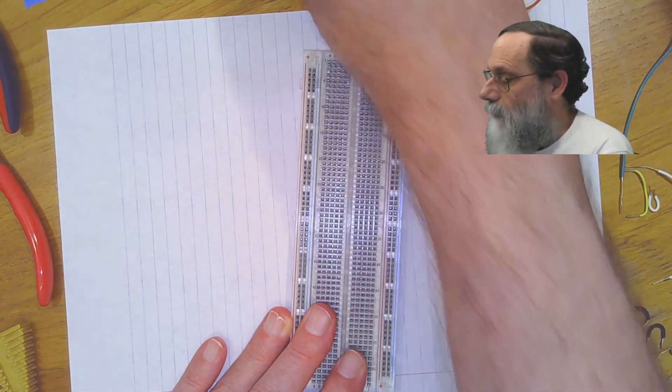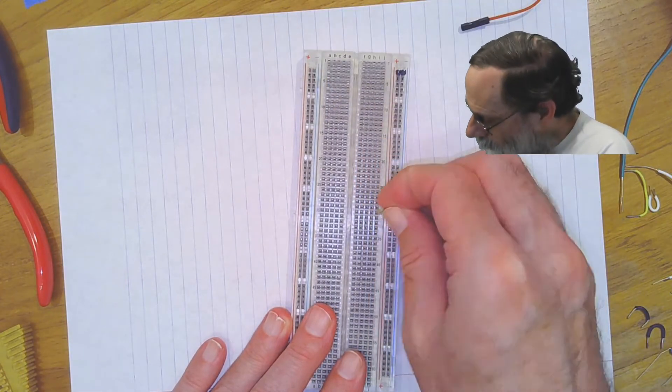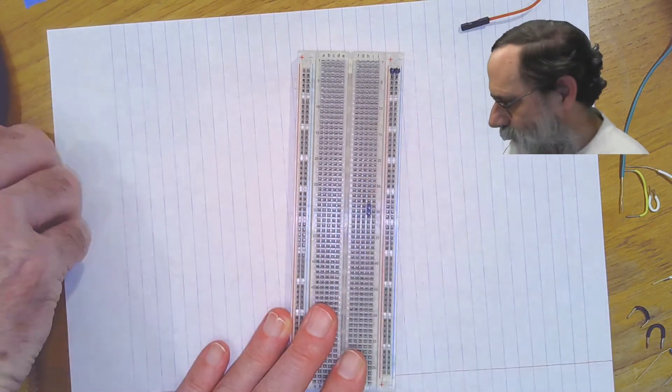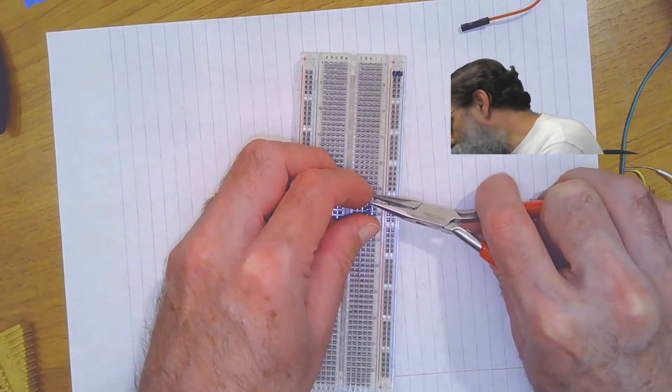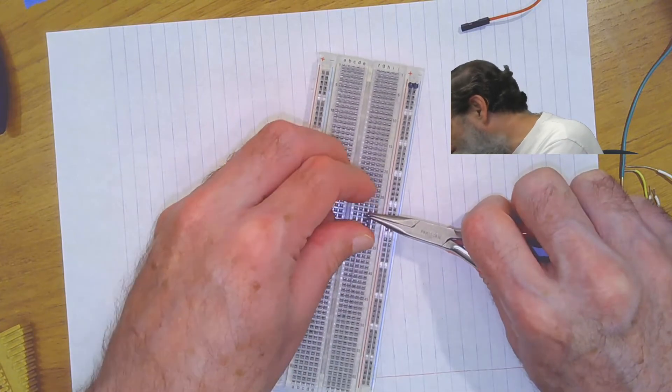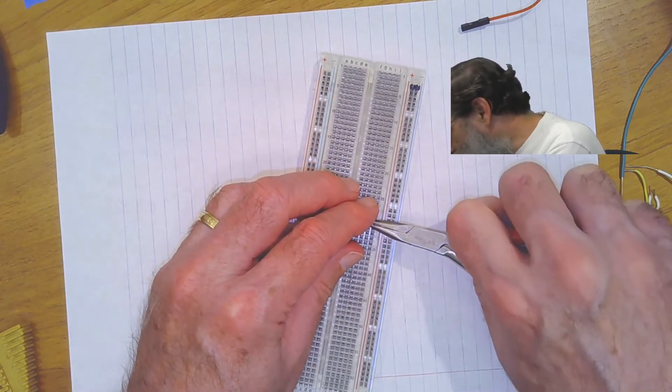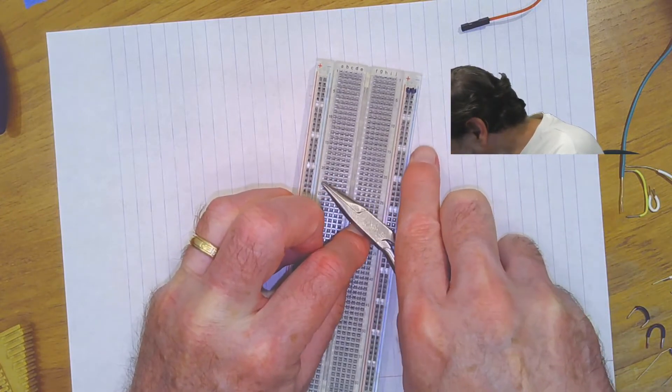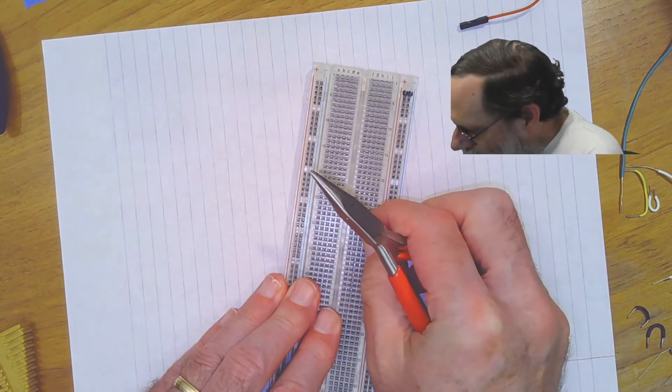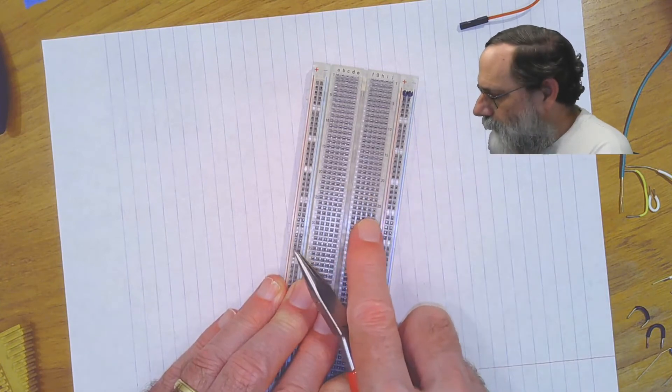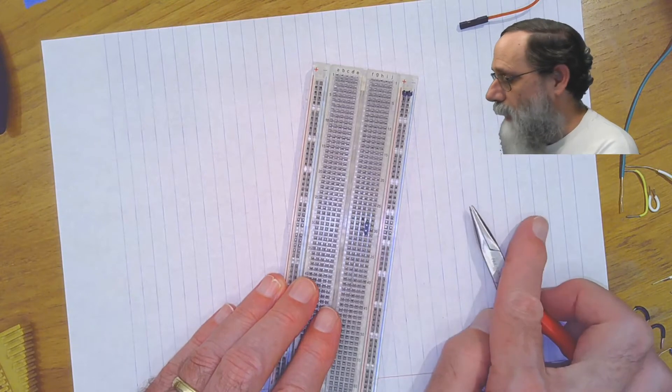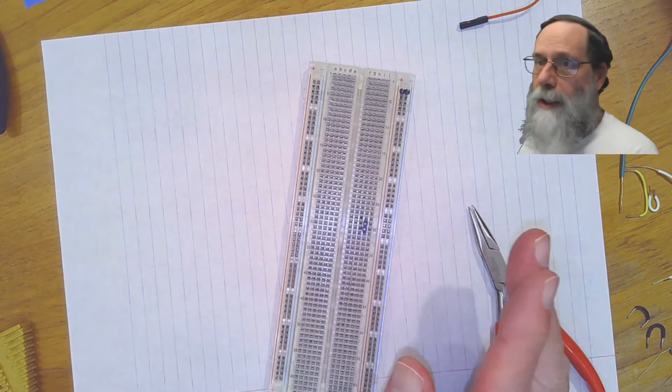Instead of doing that, take two pins and if you've got clumsy fingers like me, you're probably better off doing this with a pair of pliers, pushing in both pins. And that gives me a little bit of wobble in this direction, but very little in the other direction. And that makes better connections. You're less likely to pull it out accidentally.